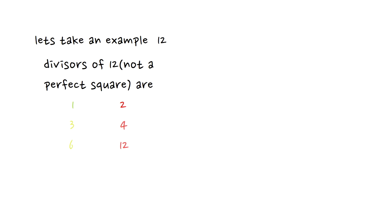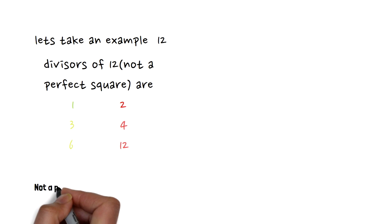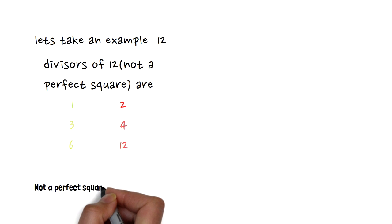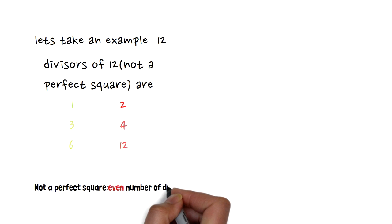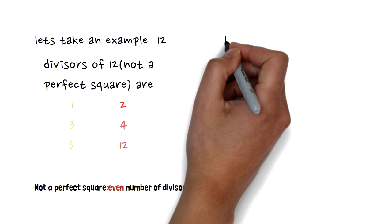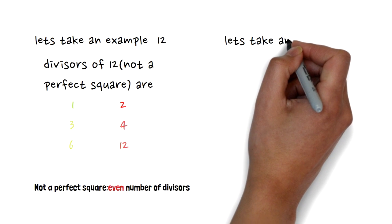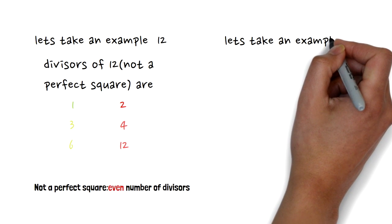Similarly in the third and fourth rounds the 12th bulb is toggled since both 3 and 4 divide 12. In the sixth round the 12th bulb is toggled again — it was off, now it's on. In the 12th round it is switched off again. So we can observe that any number which is not a perfect square has an even number of divisors, so it ends up off.